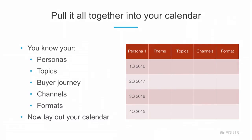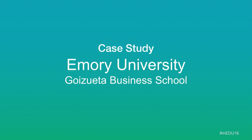You pull it all together into a calendar — every quarter you'll have topics and themes based on each persona, and then based on those topics and themes you figure out the ideal channel and the ideal format for that specific persona and content type. That ultimately drives your day-to-day content marketing production and strategy. With that, I'll invite Angela up to go deeper and walk through some of the specific programs she's run.